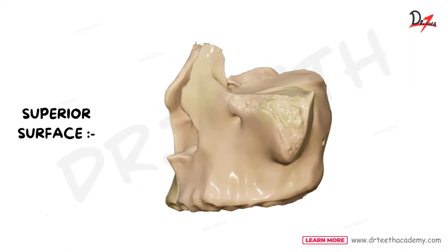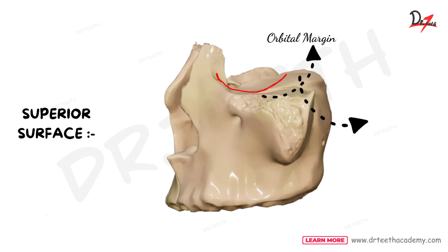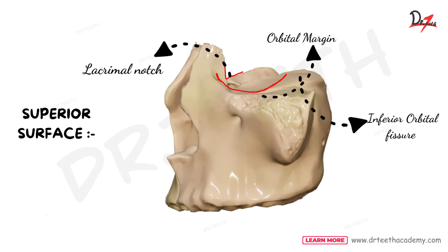The third one is the superior surface or the orbital surface which is smooth, triangular and slightly concave. It forms a greater part of the floor of the orbit. Its anterior border forms part of the inferior orbital margin. Its posterior border forms most of the anterior margin of the inferior orbital fissure and its middle border presents a lacrimal notch. Anteriorly behind the notch, it articulates with the lacrimal, labyrinth of the ethmoid and orbital process of the palatine bone. On the orbital surface, we find a groove, a canal and a foramen. The infra-orbital groove leads into the infra-orbital canal which opens on the surface as the infra-orbital foramen, serving as the passage of the infra-orbital nerves and vessels. In the midpoint of this canal, there is a lateral branch called the canalis sinuos for the transmission of anterior superior alveolar nerves and vessels.